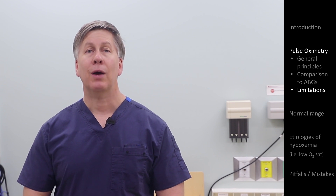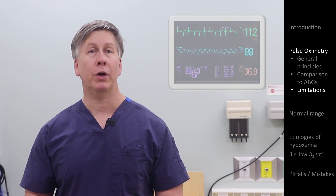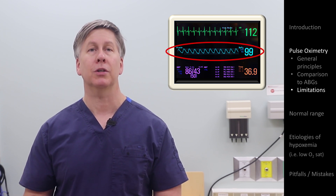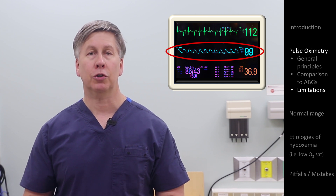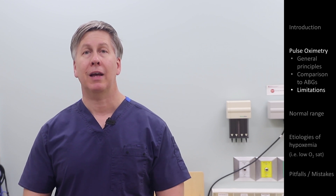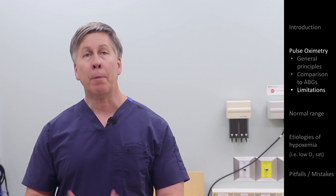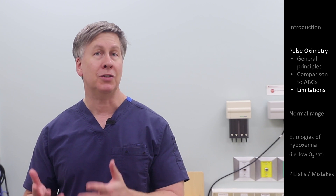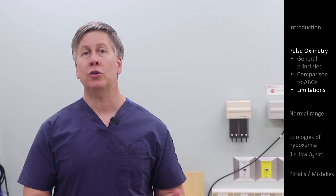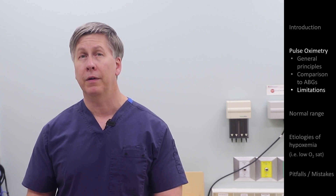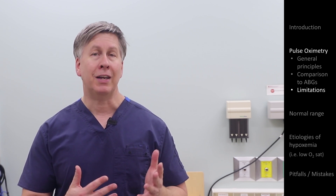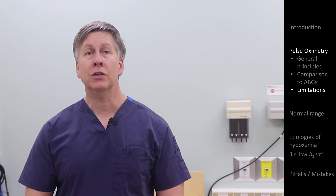On some devices, that waveform is visibly represented on a screen, from which you can determine whether it appears to represent the normal shape and rate of the arterial pulse. On other devices, the waveform is not represented, and the device is supposedly designed to simply not provide any number at all if it does not sense pulsatile flow. But unfortunately, sometimes these devices will still provide an O2 sat even when the signal for pulsatile flow is poor — and if the waveform is not displayed and you only see a number, you will not know it's inaccurate.